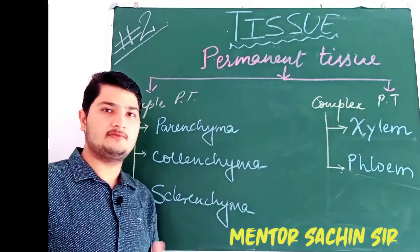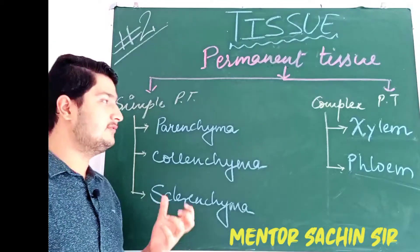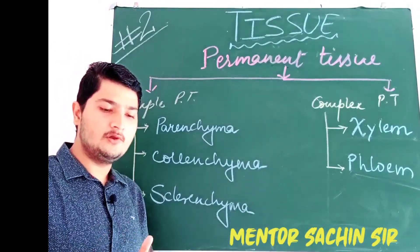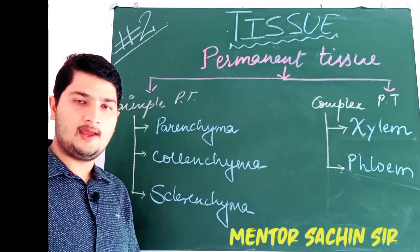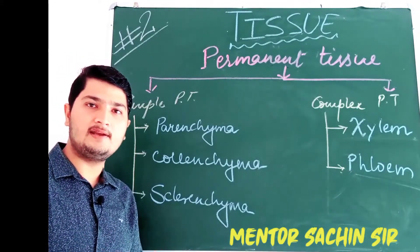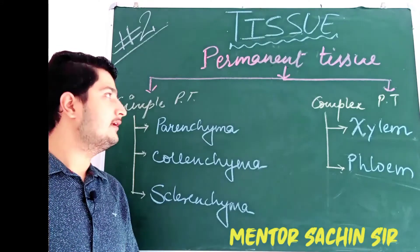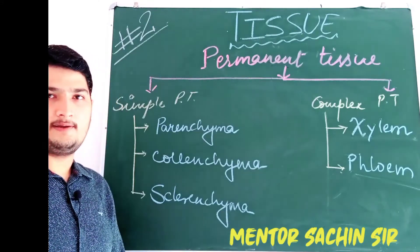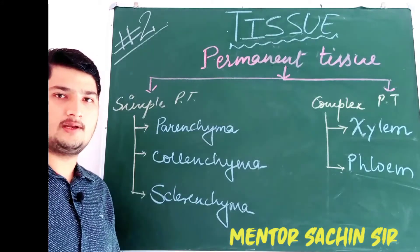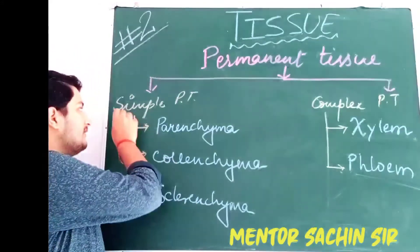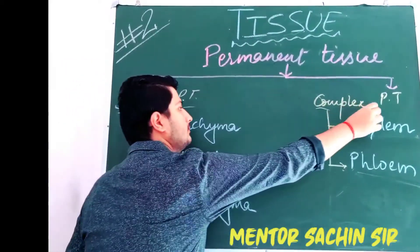In this video, we will discuss about permanent tissue. What are permanent tissues? Permanent tissue is a tissue which lacks the ability of cell division. Such tissue is said to be permanent tissue. And permanent tissue is basically divided into two categories.